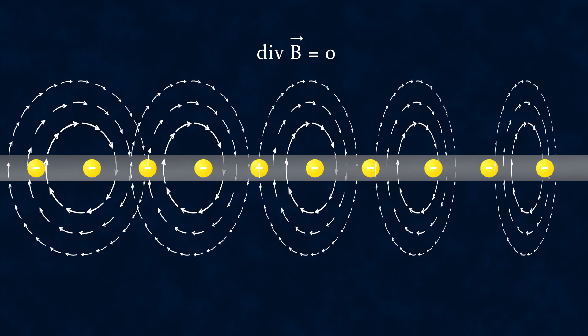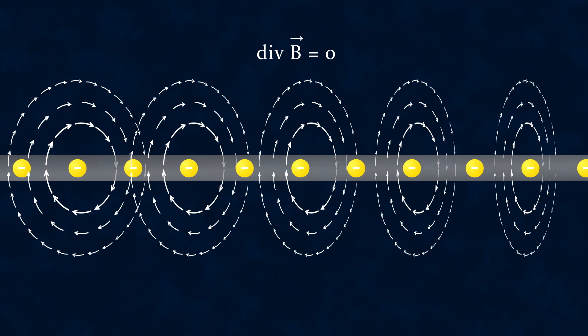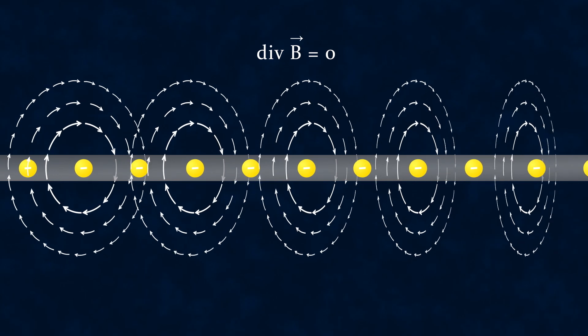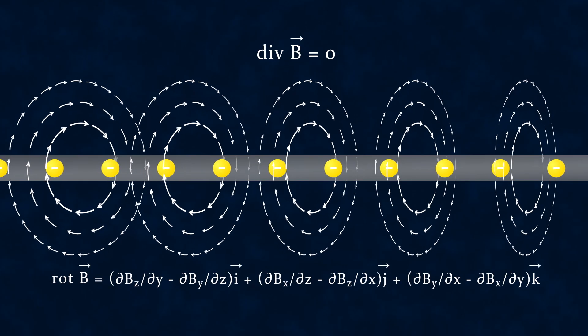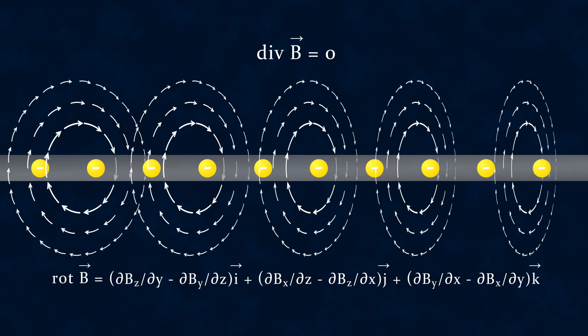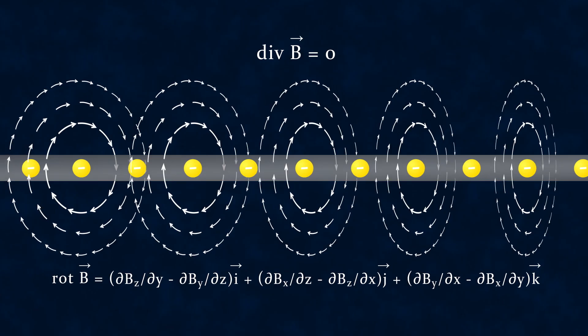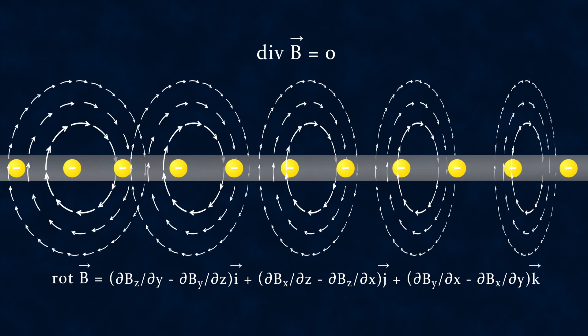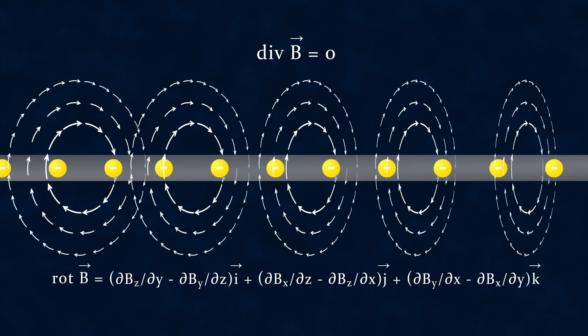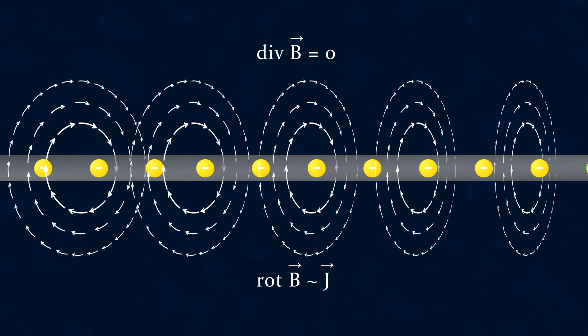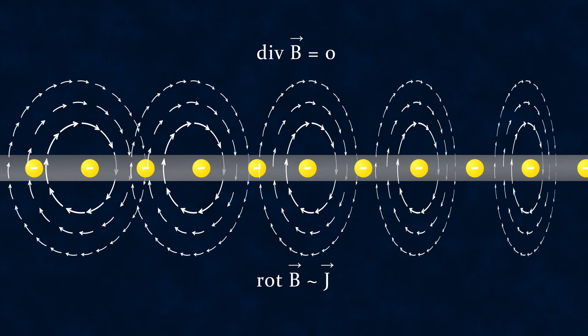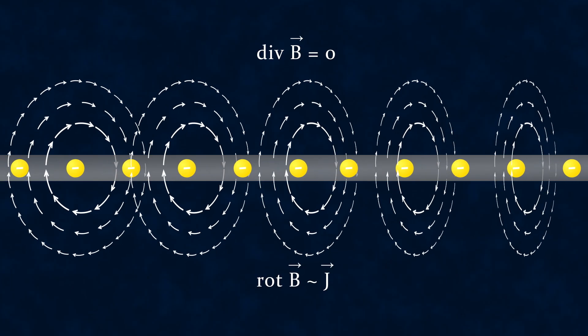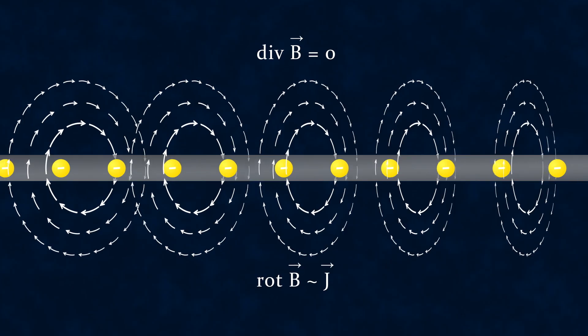Next, the link between a vortex field and its source in vector field theory is given by another operator, the curl. For those especially curious, in Cartesian coordinates, it is written like this. But what matters more for us now is that, with its help, the fact that a magnetic field is generated by electric current can be expressed in this form, where J stands for the current density. In this way, we get another of Maxwell's equations, known by a separate name, Ampere's law.